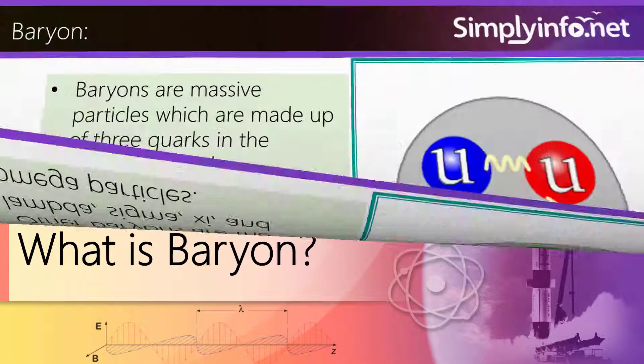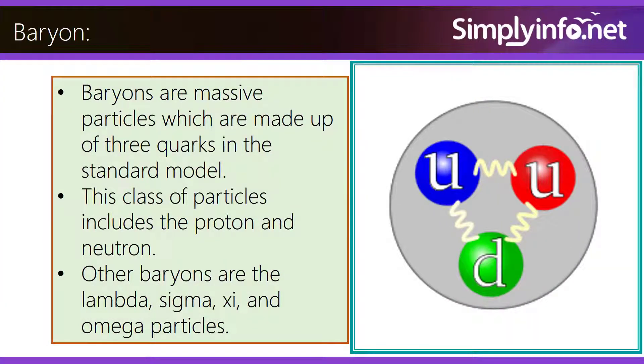What is baryon? Baryons are massive particles which are made up of three quarks in the standard model. This class of particles includes the proton and neutron.